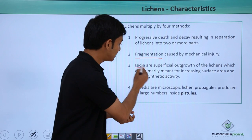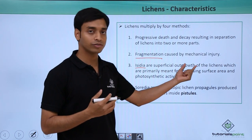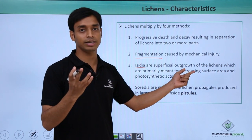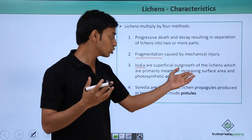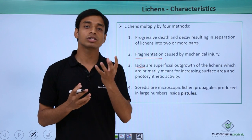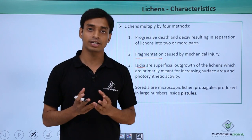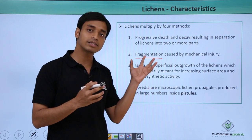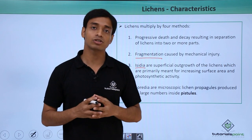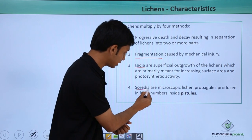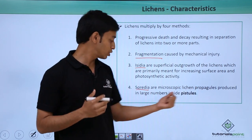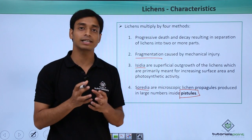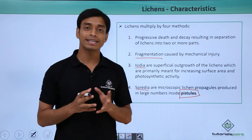By the formation of Isidia, certain superficial outgrowths of the lichens are produced primarily meant for increasing surface area. To absorb more sunlight for photosynthetic activity, the lichen increases its surface area by making structures known as Isidia. Also, certain structures known as Soredia are microscopic lichen propagules produced in large numbers inside certain structures present inside the lichens. These are the ways in which lichens can multiply.